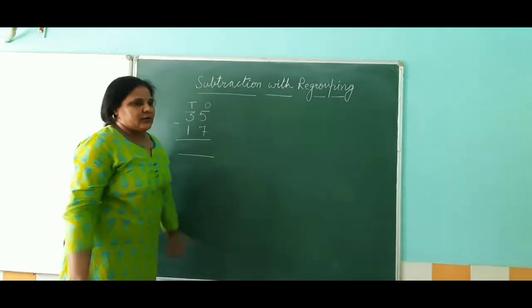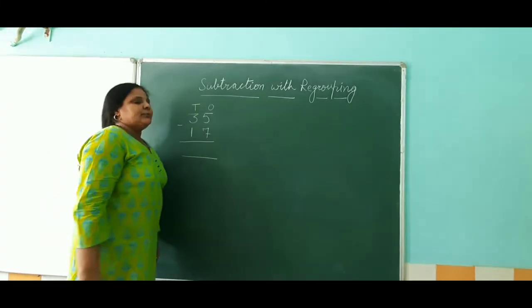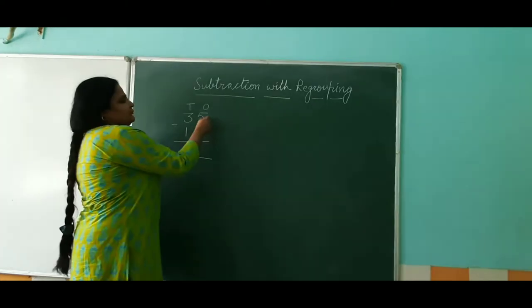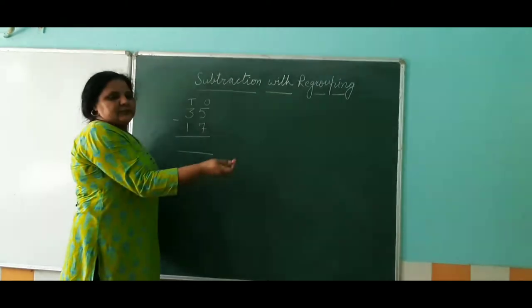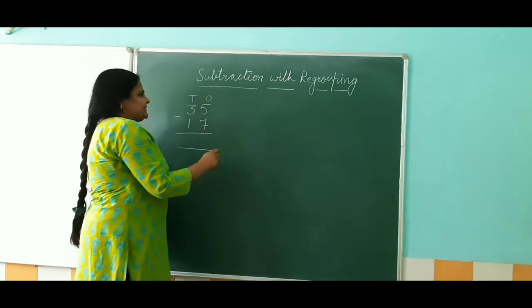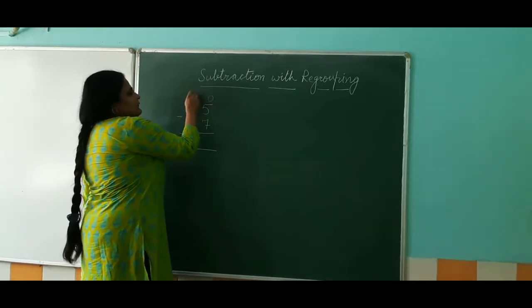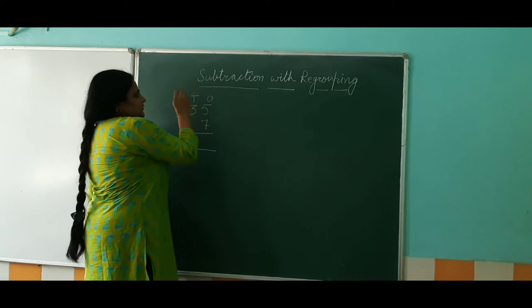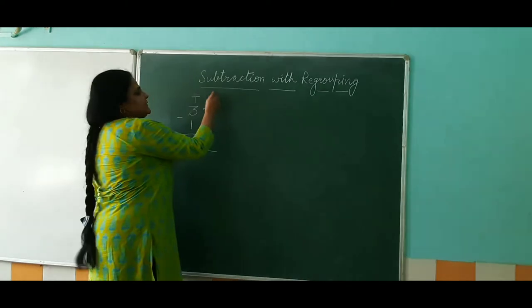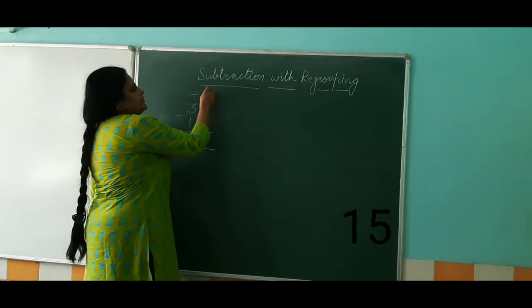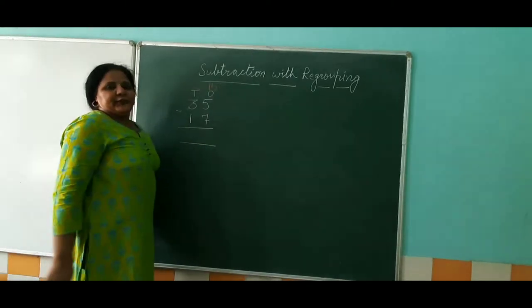So what we do is we have to ask from the tens to give 1 ten to ones. So when 10 gives 1 to the ones, it will become 10 plus 5, which is 15.